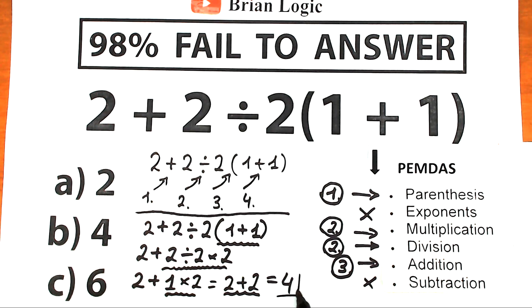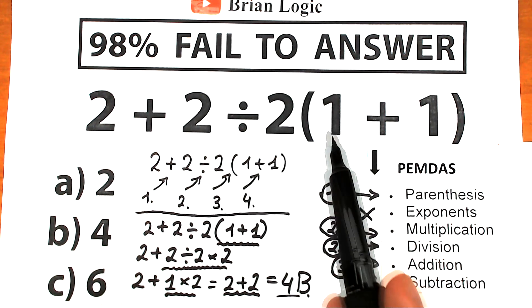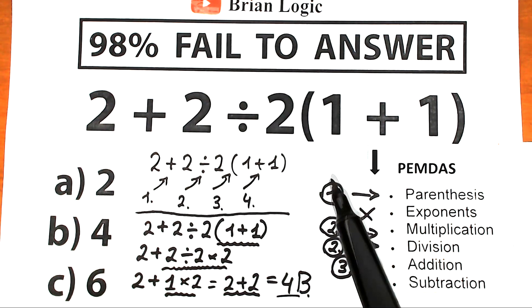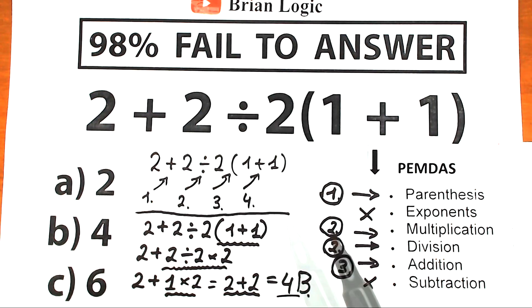The correct answer is 4 — this is option B. You can verify this in a scientific or graphing calculator, but don't use a regular calculator, because some of those process the problem as you type it in and may give you an instant wrong result. If you plug in the whole entire problem, a scientific calculator is smart enough to know the correct order: parentheses, then multiplication and division, then addition.